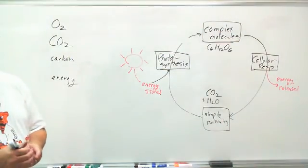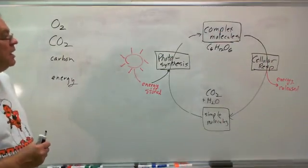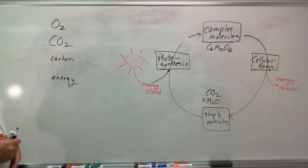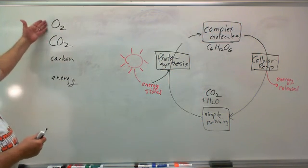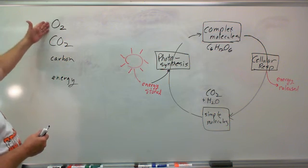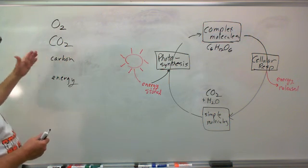Alright there, the last section in the photosynthesis unit is this: What does photosynthesis do for life on Earth in terms of four things? Oxygen, carbon dioxide, carbon, and energy.